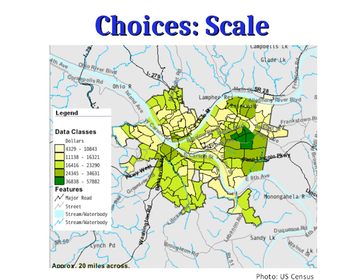Another important choice is the scale of your map. Scale determines how big an area of the Earth your map covers, and how much detail you're able to show — the more area you want to show, the less detail you can generally include. Here's a map of the city of Pittsburgh showing average household income. We can see that the Shadyside neighborhood is one of the richest areas, while the Hill District and Homewood are on average very poor. To explain that pattern, we'd look at things like housing discrimination, urban redevelopment programs, and the location of industry.